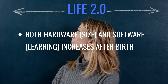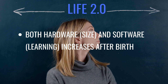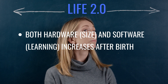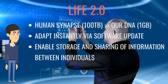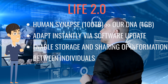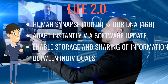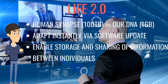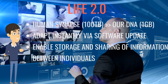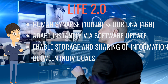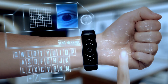The information must be acquired through experiences during one's lifetime. Another advantage of Life 2.0 is that it can instantly update its software, giving it evolutionary advantages to adapt to environmental changes. As another by-product of evolution, Life 2.0 enables the storage and sharing of information from one individual to another, effectively building a cultural layer on top of an individual layer.